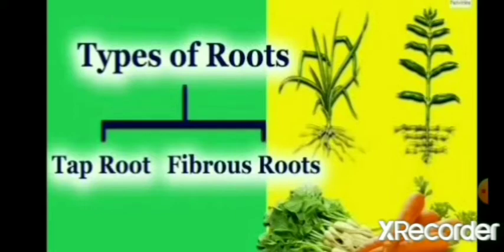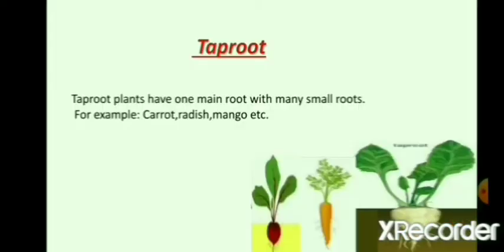Let's study more about tap root and fibrous root. A tap root system has a single main root that grows vertically downwards with many small roots branching out of it. Some examples of plants that have a tap root include carrot, radish, beetroot, turnip, coriander, etc.